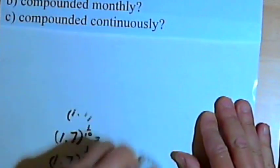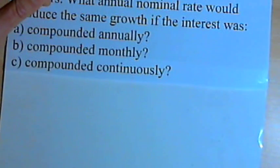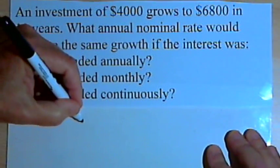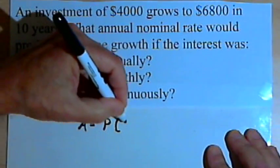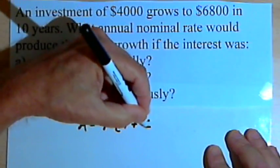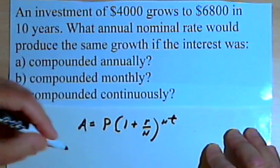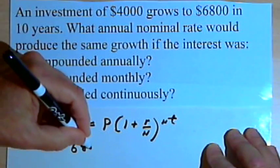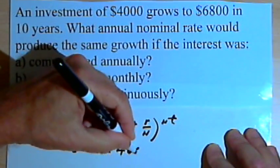Now let's go on to the next part. This is where the money is invested and compounded monthly. So we'll have that same formula again: A equals P times 1 plus r over n raised to the nt power. A once again is 6,800 and P is 4,000.